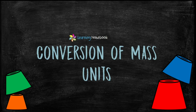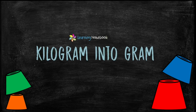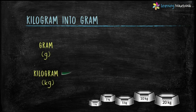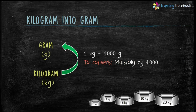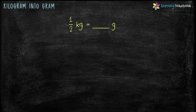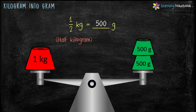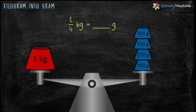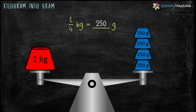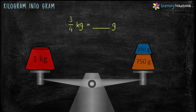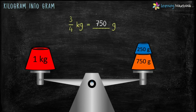Let's start with the conversion of mass units. First, let's see how to convert kilogram into gram. 1 kilogram equals 1000 grams, so to convert kilogram into gram, we multiply by 1000. Based on this, a few more relationships: 1/2 kg equals 500 g, 1/4 kg equals 250 g, and 3/4 kg equals 750 g.